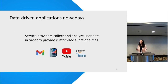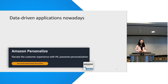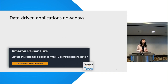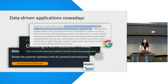Online services we use every day heavily rely on analyzing user data to provide customized functionalities. Examples include spam filters, text predictions, shopping recommendations, and more. In recent years, machine learning has become especially popular in building prediction models in this process. For instance, Gmail uses machine learning powered by user feedback to better detect spam.